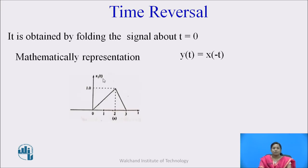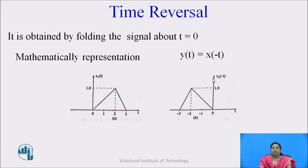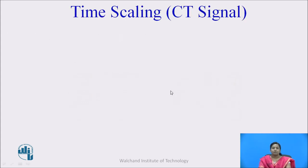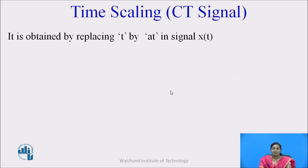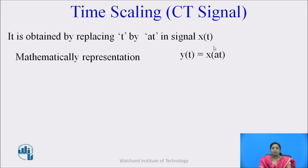Suppose the signal x(t) is given; its time reversal signal x(-t) is nothing but a reflection about t = 0, or reflection about the y-axis. So x(-t) is the mirror image of the input signal x(t). Then recall the time scaling property — it is obtained by replacing t by αt in the signal x(t). Mathematically it is represented as y(t) = x(αt).